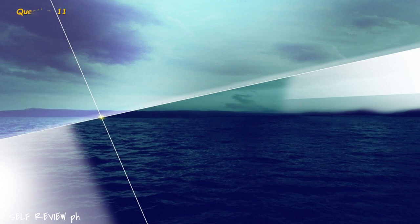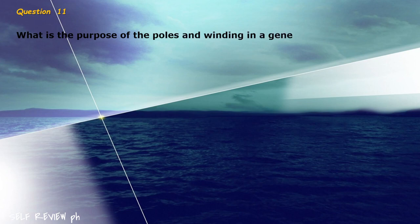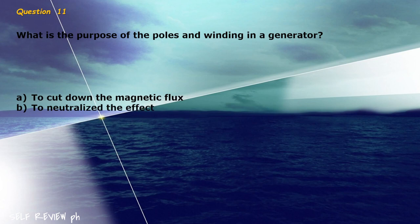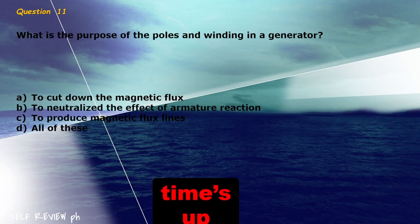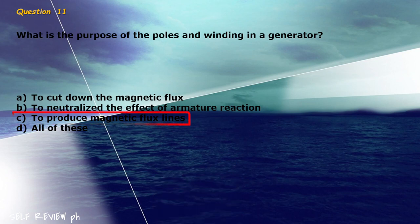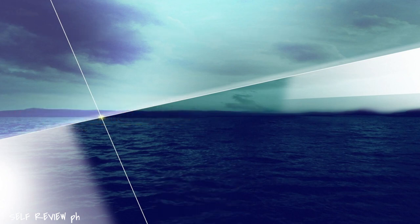Question 11: What is the purpose of the poles and winding in a generator? A) to cut down the magnetic flux, B) to neutralize the effect of armature reaction, C) to produce magnetic flux lines, D) all of these. The correct answer is letter C, to produce magnetic flux lines.